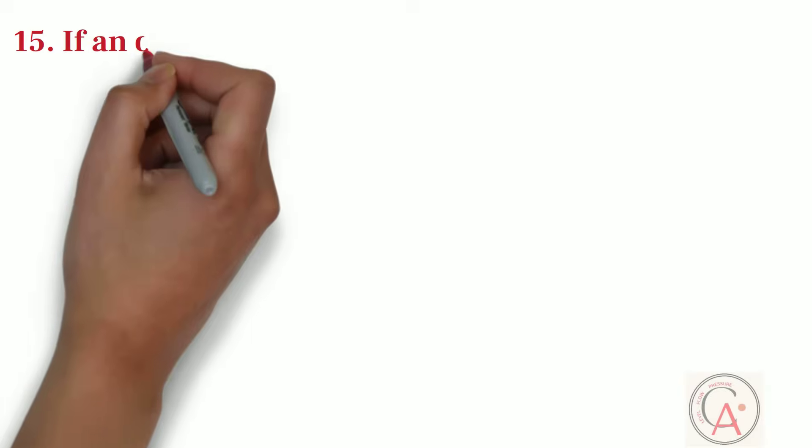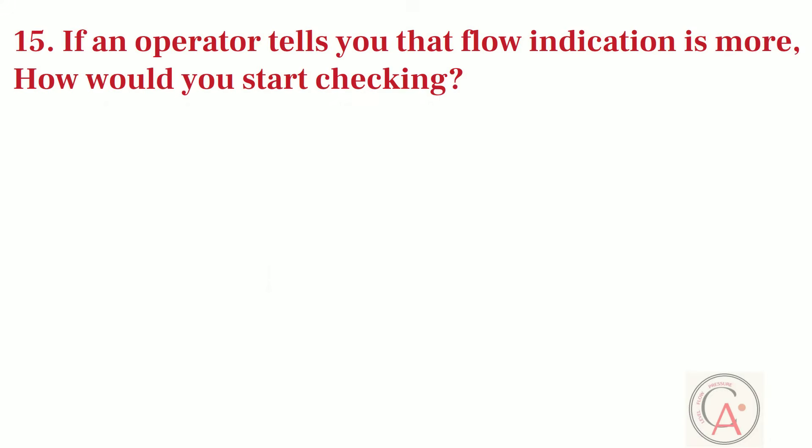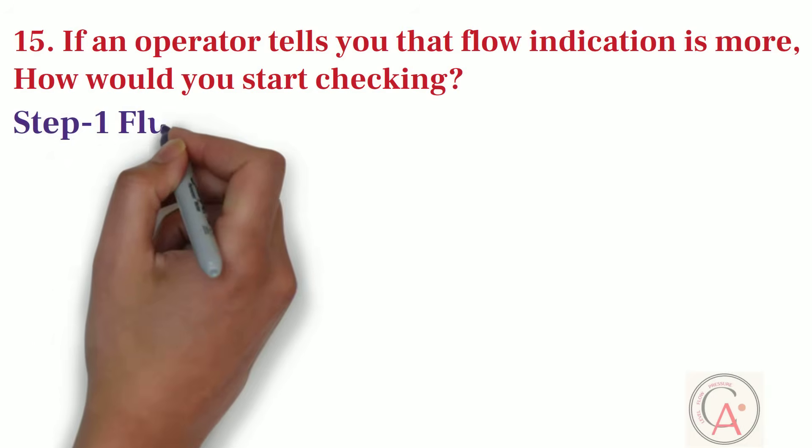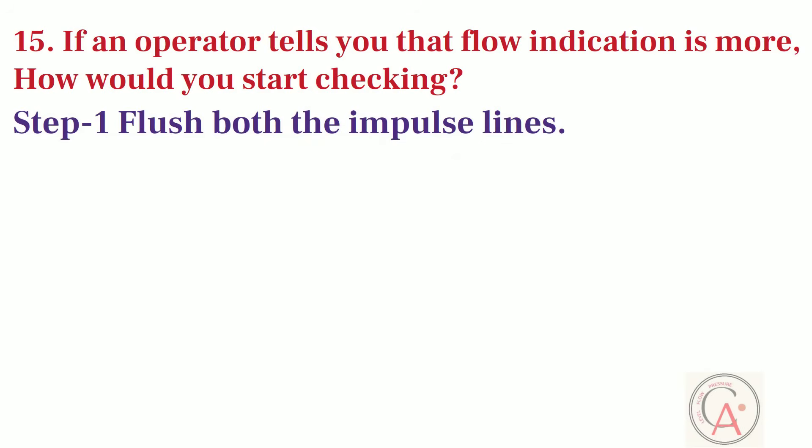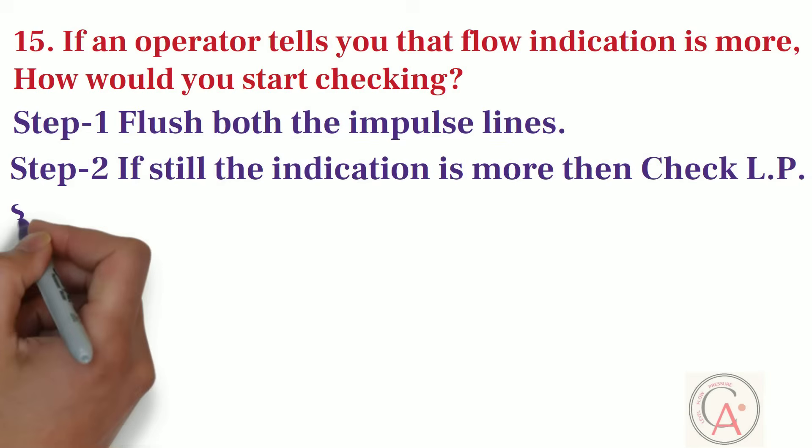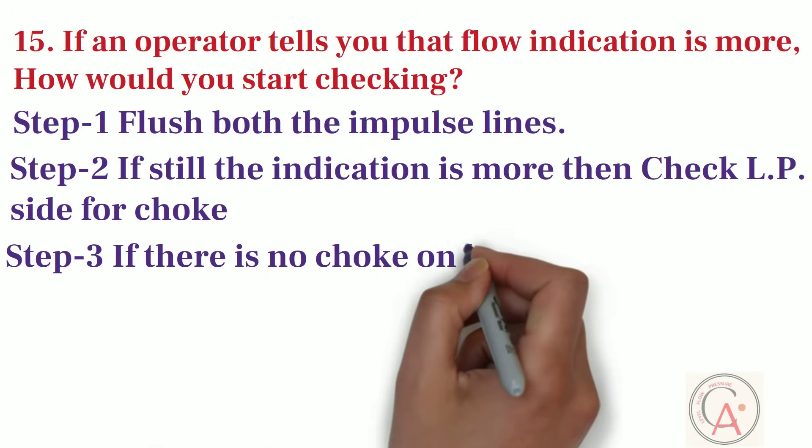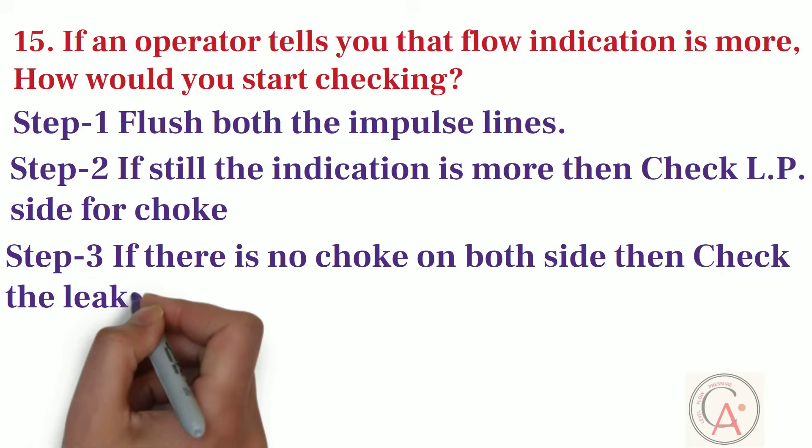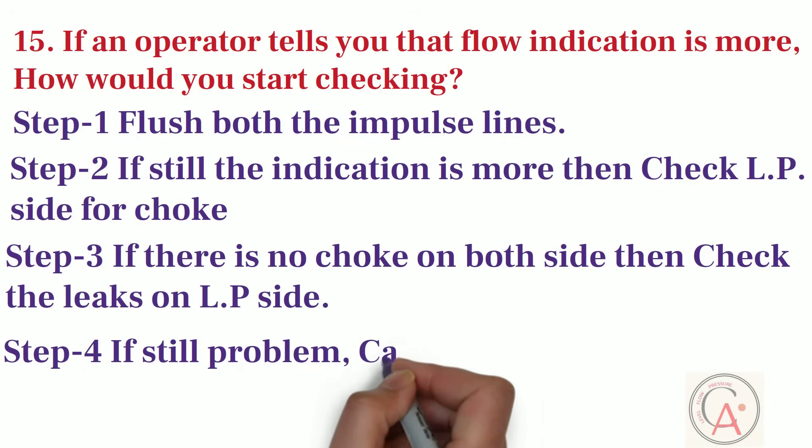Next question is, there is a situation when an operator tells you that flow indication is more than the expected reading, how would you start checking? First of all, in this case, flush both the impulse lines. Secondly, if still the indication is more, then check low pressure side for choke. If there is no choke on the both side, then check leaks on the LP side. If there is still problem, then calibrate the transmitter.